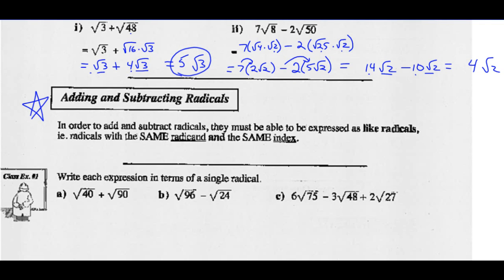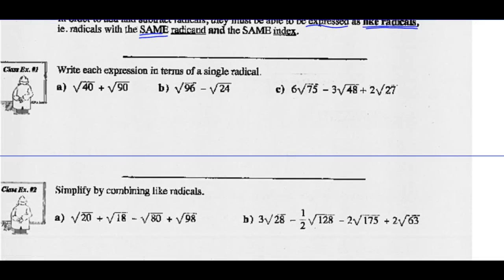So adding and subtracting radicals: in order to add and subtract radicals, they must be able to be expressed as like radicals, meaning they have to have the same radicand and same index number. These are all square roots — all understood to be index numbers of 2 — but we could also do the same thing with cube roots or fourth roots. Sometimes they don't look like they could be added or subtracted, as in example 1a where radical 40 and radical 90 do not look the same, even though their index numbers are alike. But if we simplify them as mixed radicals first, maybe they'll have the same radicand and then we can add them.